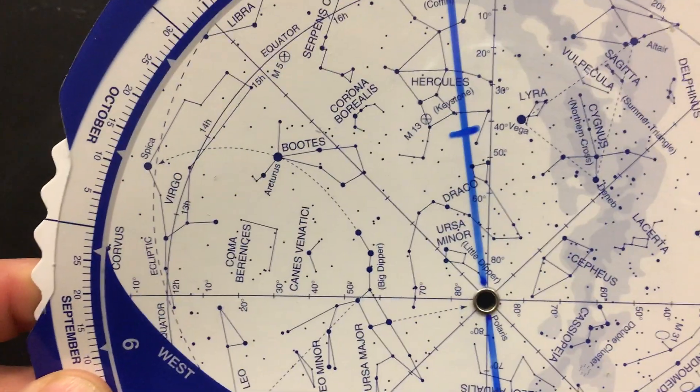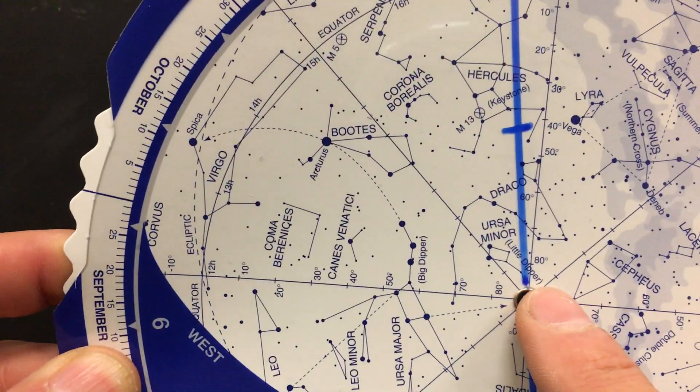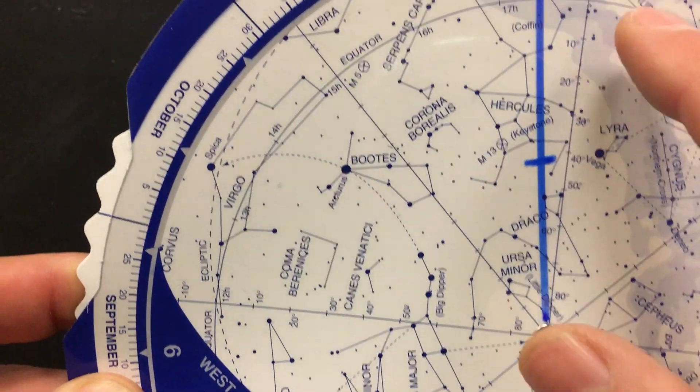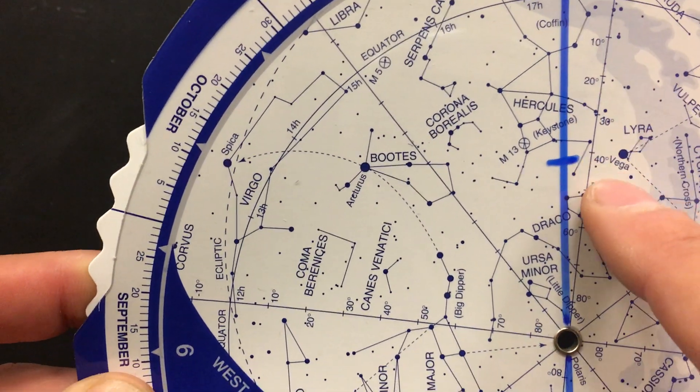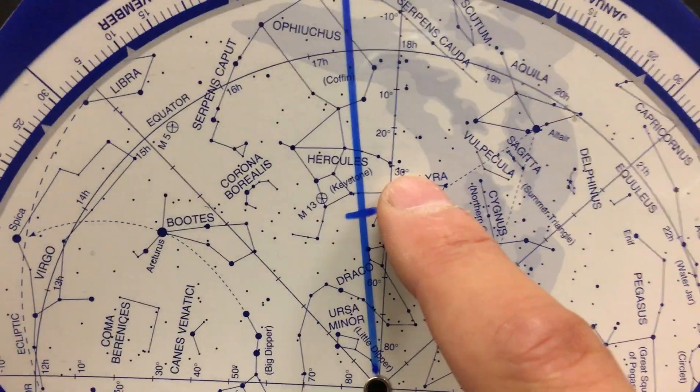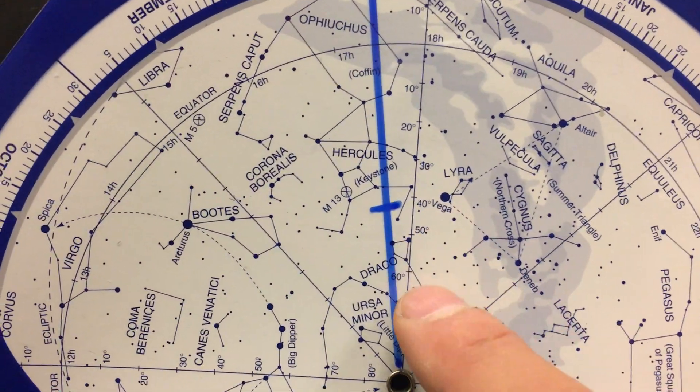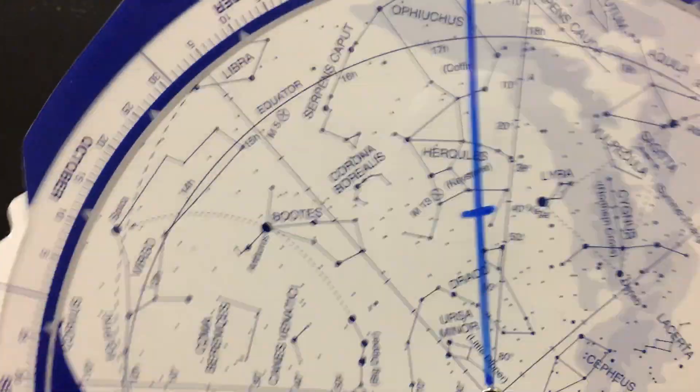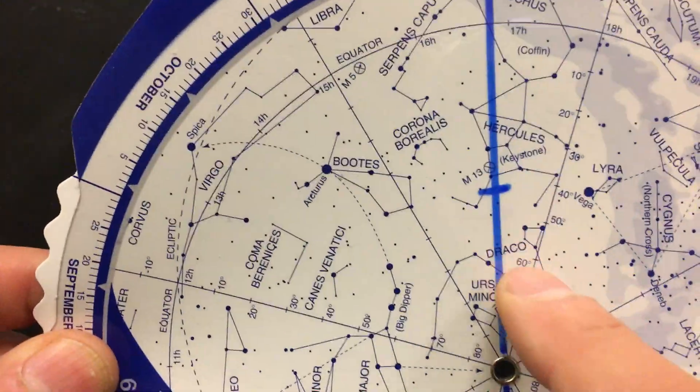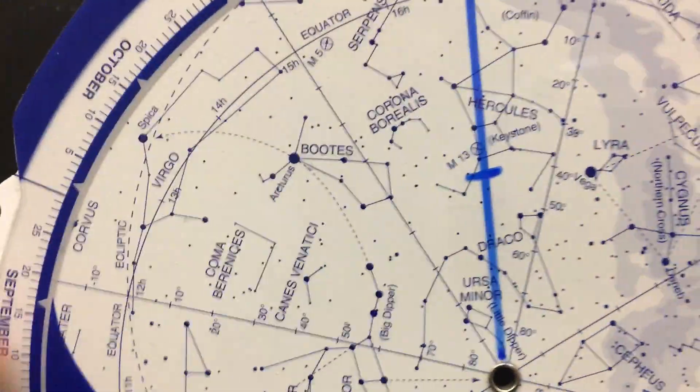You might notice there are spokes coming from Polaris, and on every other spoke there are degree marks. That tells you declination.